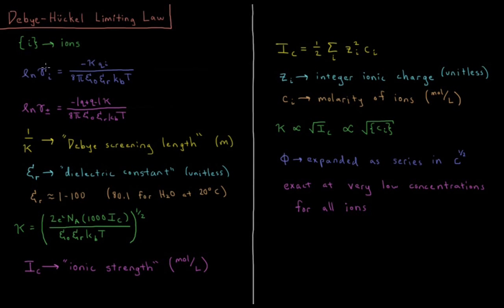The natural log of the activity coefficient of our electrolyte ion, which we discussed from the previous video on electrolyte activity, is equal to negative κ times the charge of that electrolyte divided by 8π ε₀, the permittivity of free space, times εᵣ, the dielectric constant of the solvent, times the Boltzmann constant times the temperature.